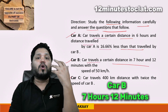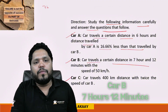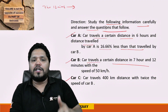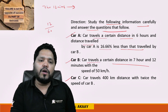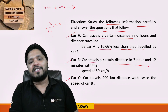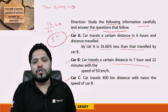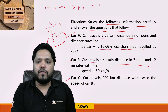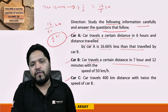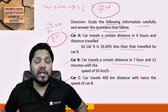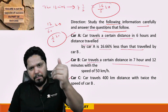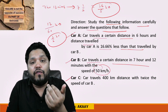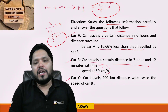Car B travels for 7 hours and 12 minutes. To convert 12 minutes into hours, divide by 60, which gives 1/5 of an hour. So total time for Car B is 7 + 1/5 = 36/5 hours. Car B is traveling at a speed of 50 km/h.